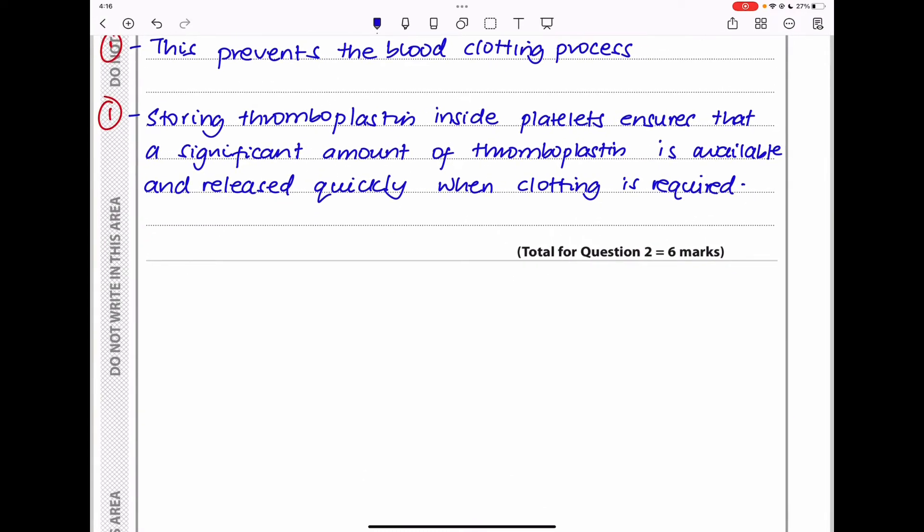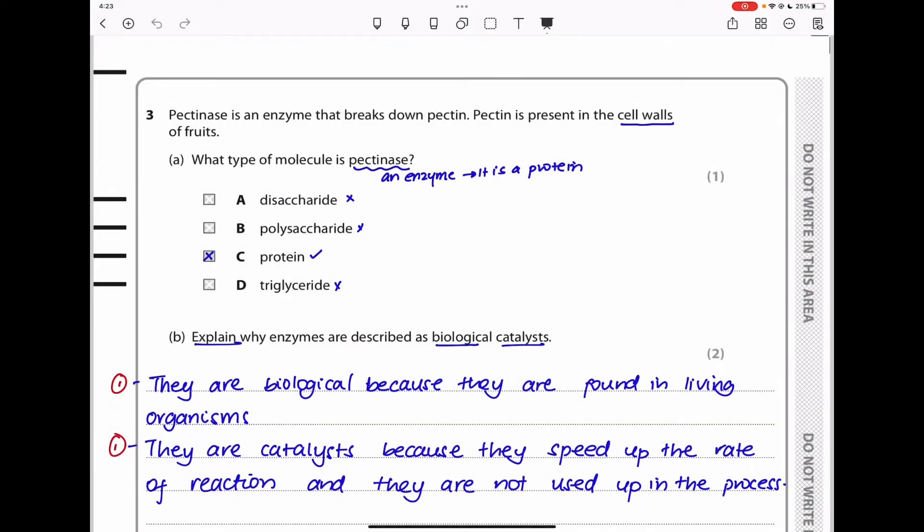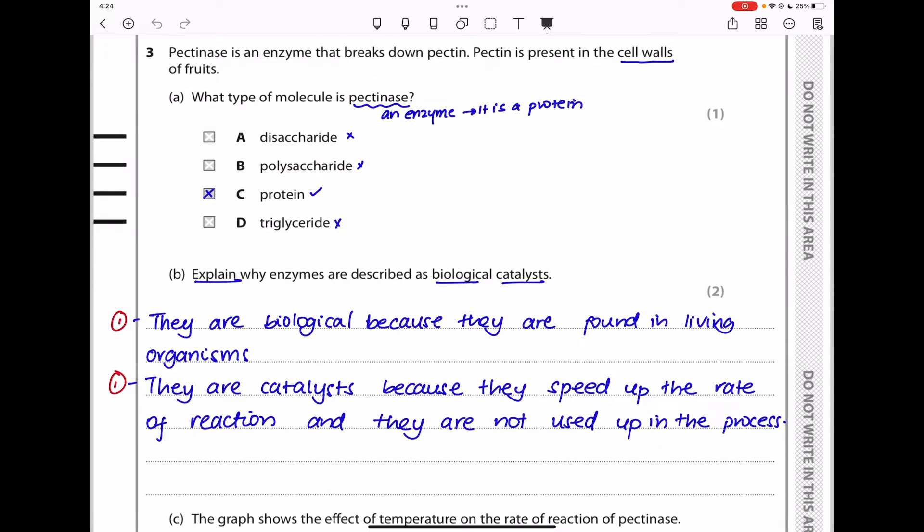Question three. Pectinase is an enzyme that breaks down pectin. Pectin is present in the cell walls of fruits. What type of molecule is pectinase? Since pectinase is an enzyme, it should be a protein. So pectinase is a protein and the answer should be C. Triglycerides, no, that is wrong. Polysaccharides are not enzymes, and disaccharides are not. The only answer that is correct is C.